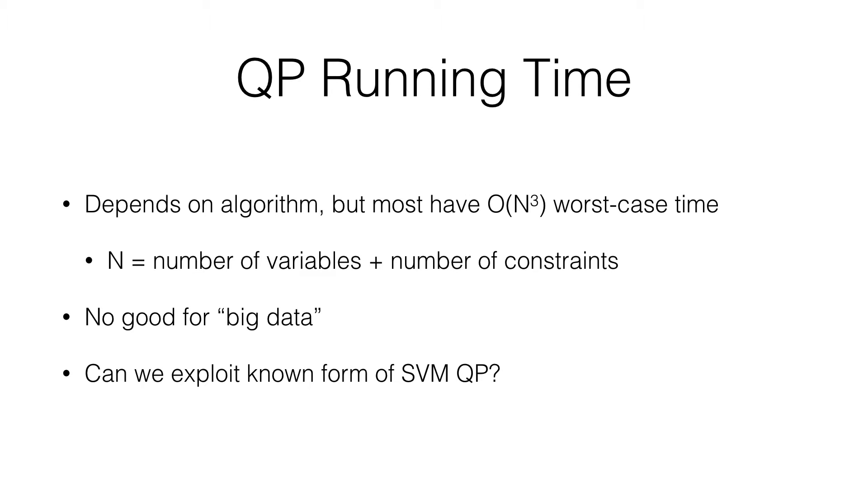So this is no good, right, because for big data, we have millions of examples as a small data set and billions in the large data set. It's certainly much larger than we can handle if we have to do a cubic time operation. So the question is, can we exploit the known form of the SVM quadratic program to try to get around this worst-case scenario? And the answer is sort of. It's not a very definitive answer, because it's quite difficult to get away from these worst-case scenarios when the data is coming in from an uncontrolled environment. But in many cases, we can often find good solutions faster than in the worst-case scenario.